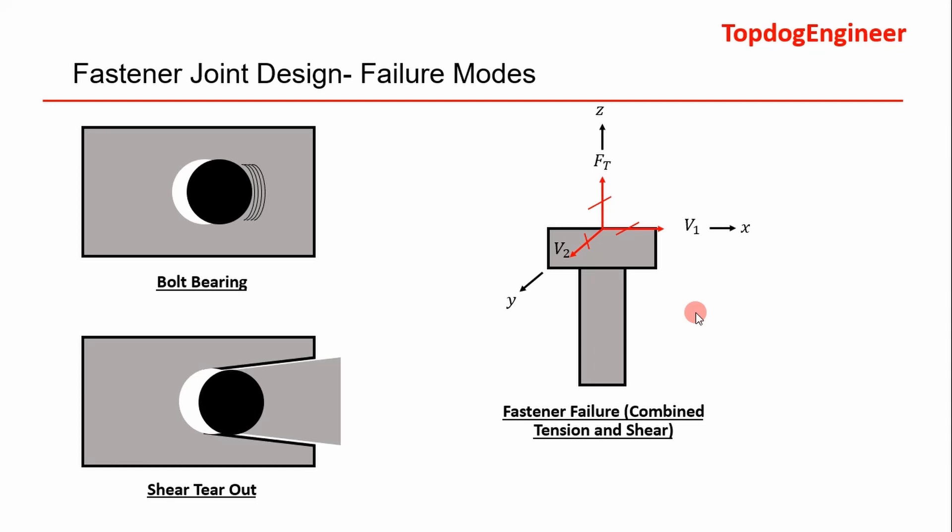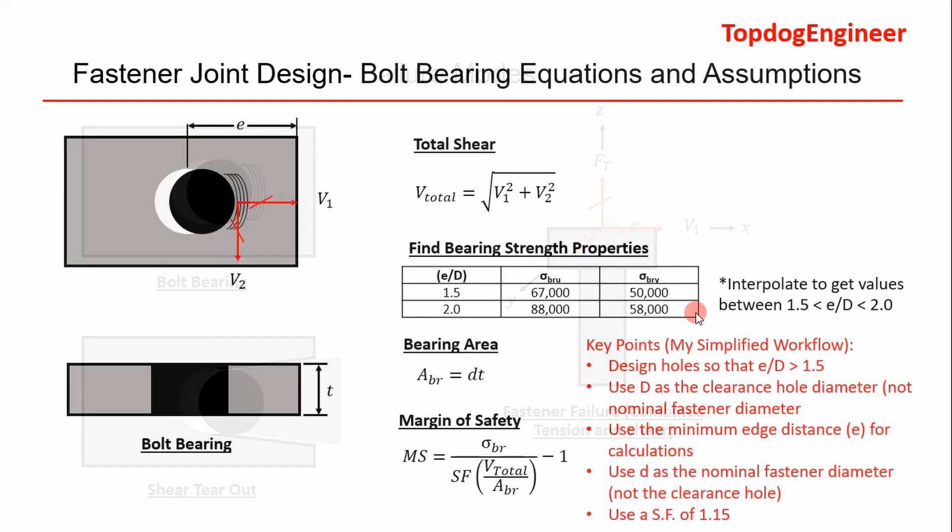We're going to take these three failure modes and go into a little bit of detail on the equations and assumptions used. That way, when we go to program it in the next video in Python using an object-oriented approach, you understand what's going on. You can refer back to this if you get confused. Now I'm going to introduce you to the equations and assumptions used in the bolt bearing calculation.